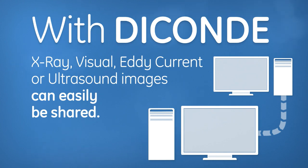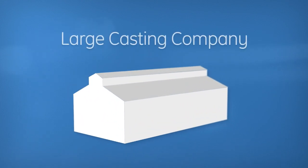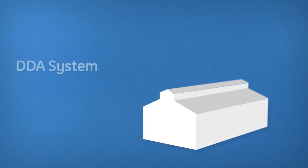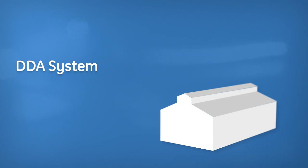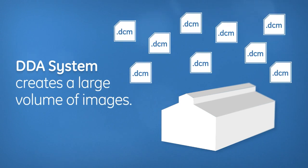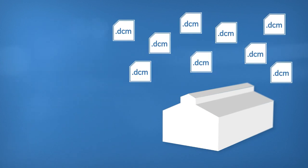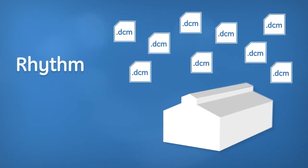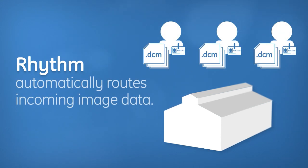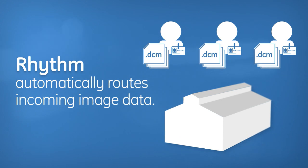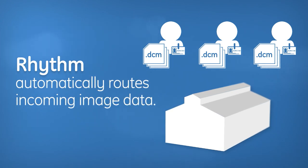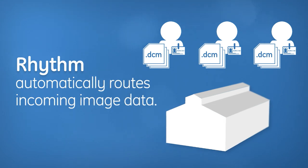This greatly reduces the level 2 and level 3 labor required in your workflow. For example, imagine a large casting company with several applications ideally suited for an automated digital detector array (DDA) x-ray system. Due to extremely fast DDA acquisition speeds, the DDA system quickly creates a large volume of images, and it became clear that image analysis would cause a process bottleneck. By choosing DICONDE-compliant Rhythm software for image management, the customer is able to automatically route incoming image data to multiple review stations, drastically enhancing productivity by eliminating laborious manual mouse-driven file sharing.